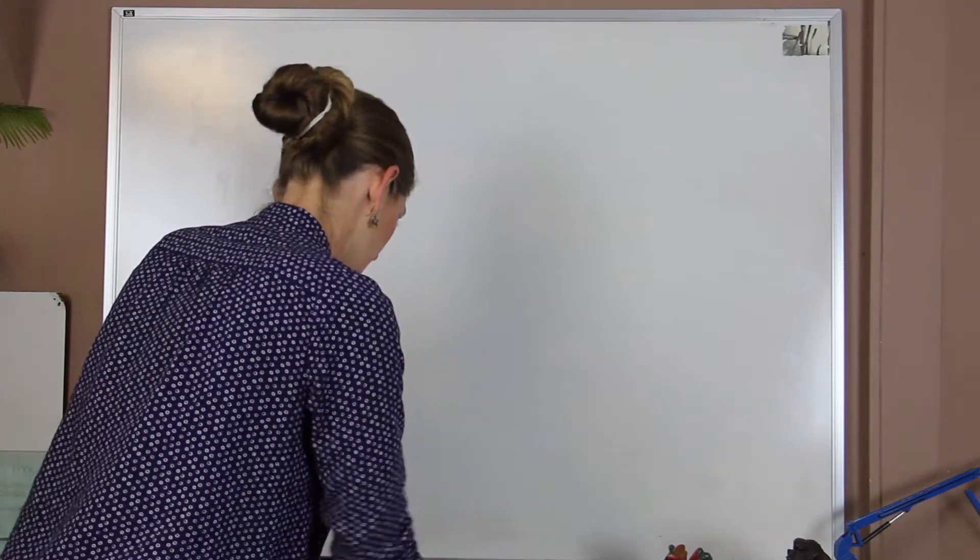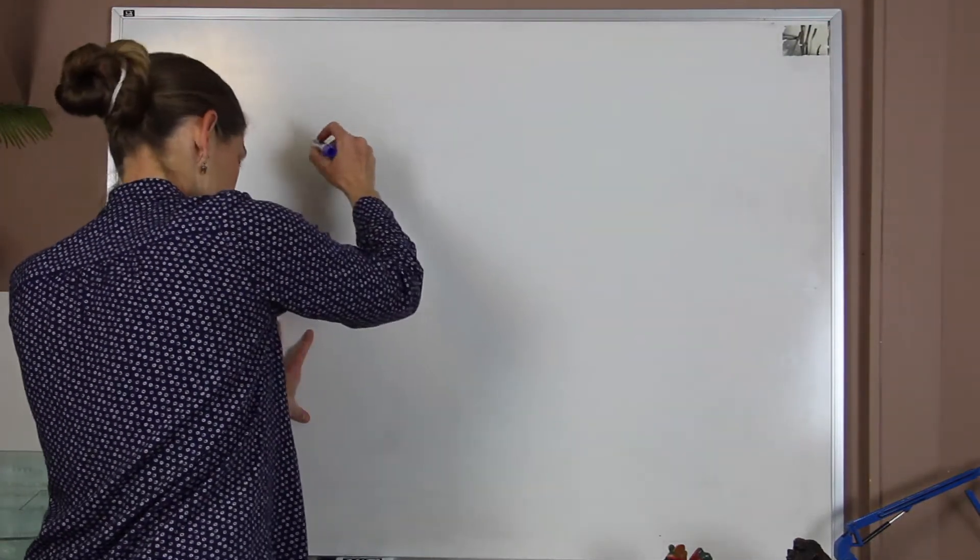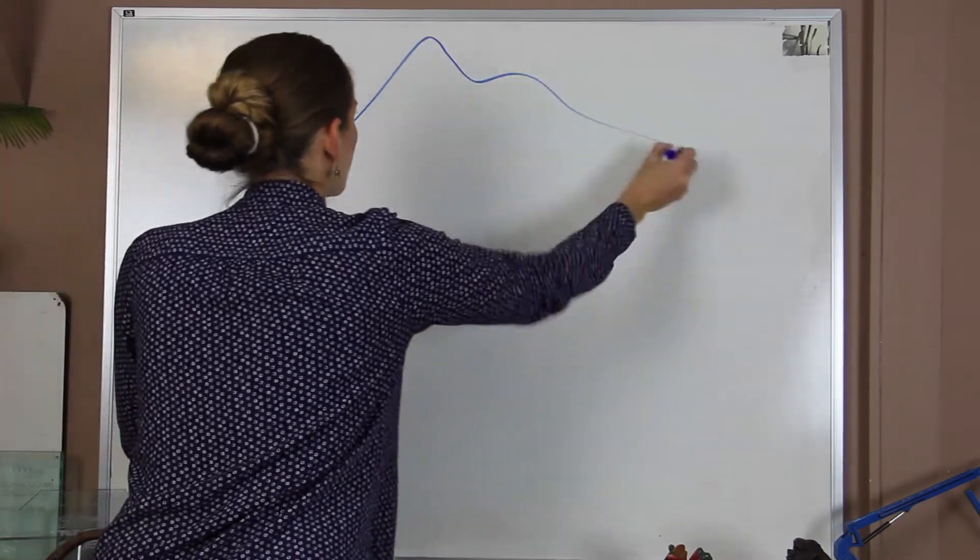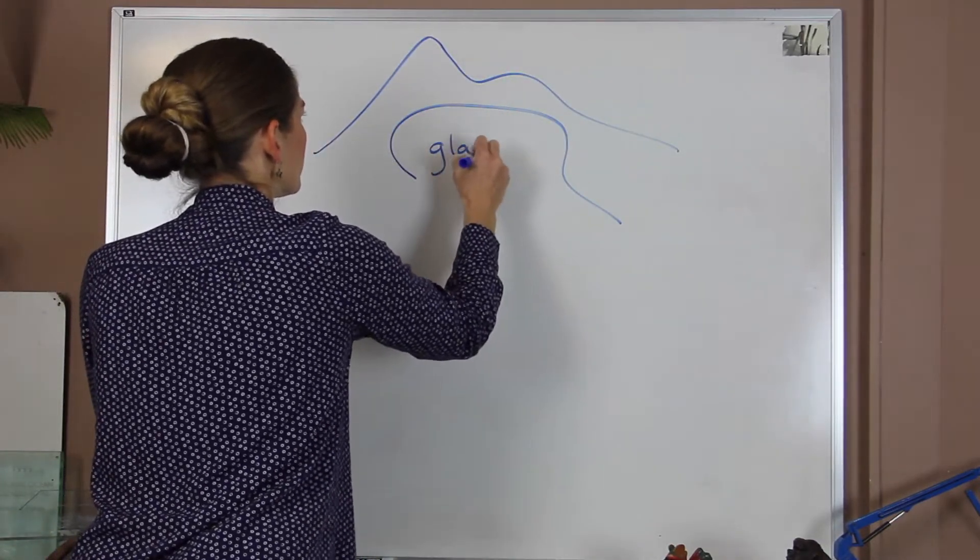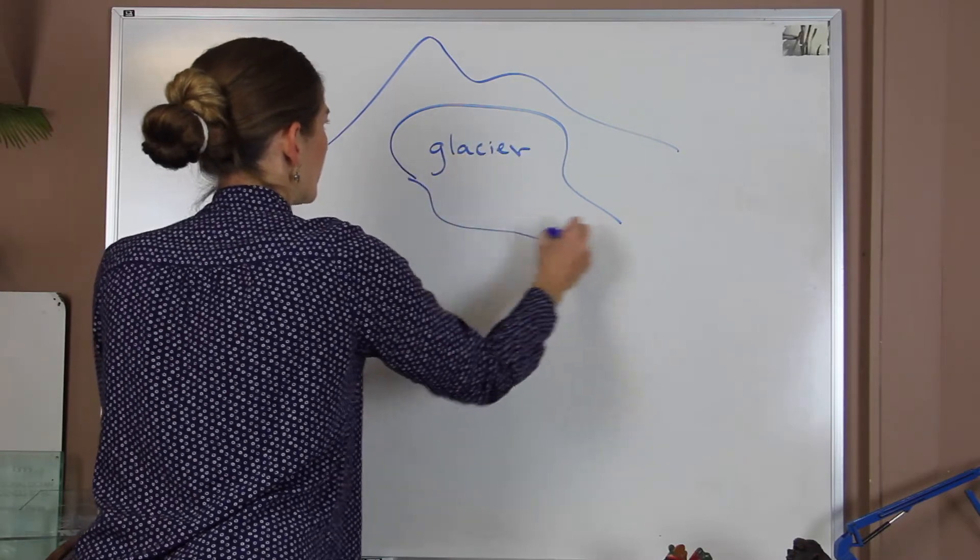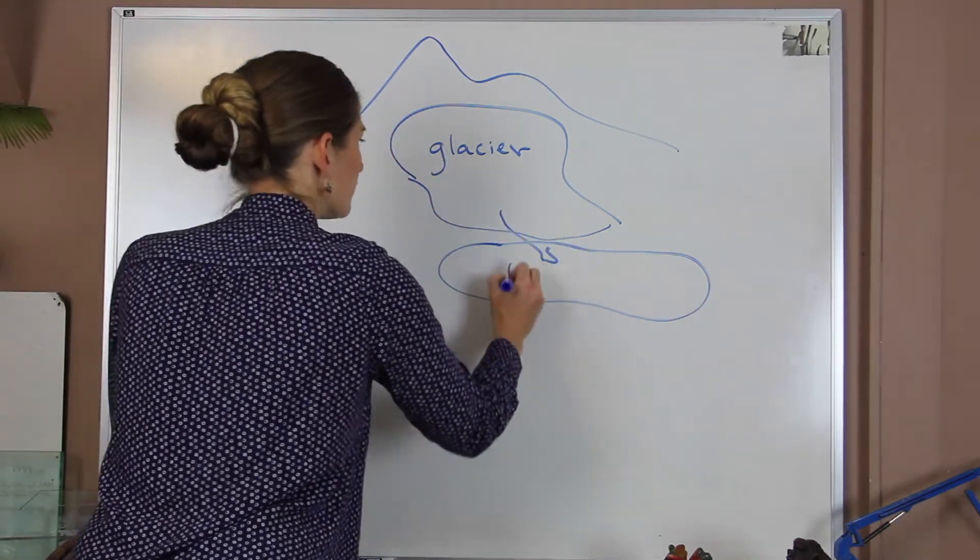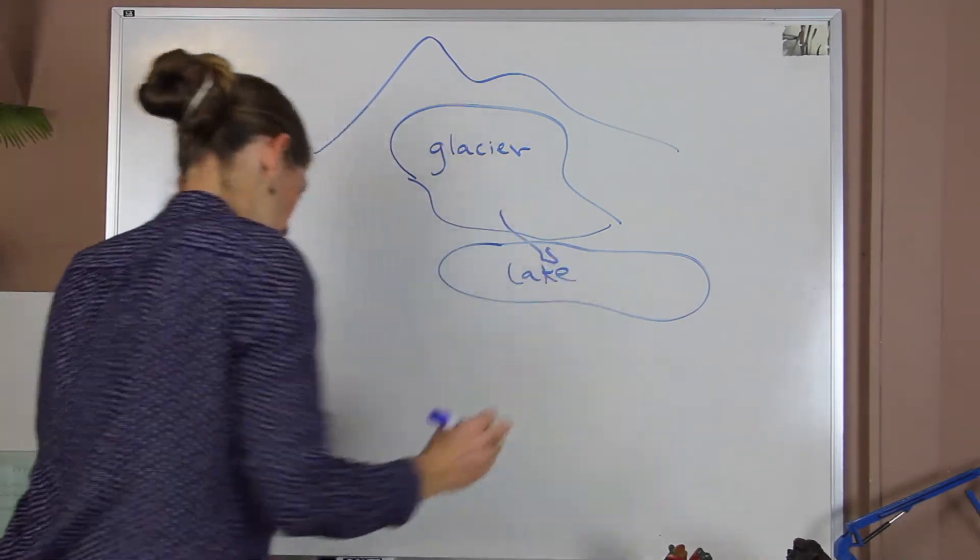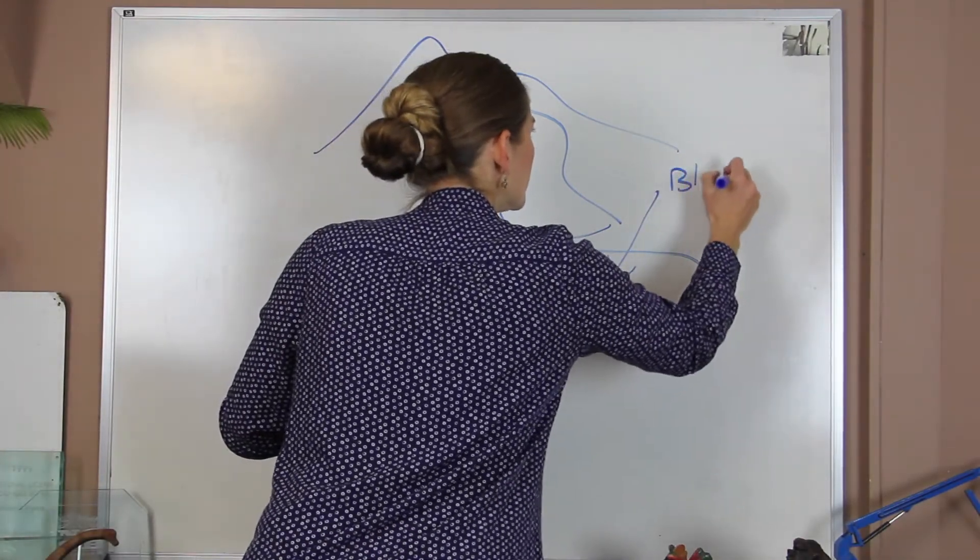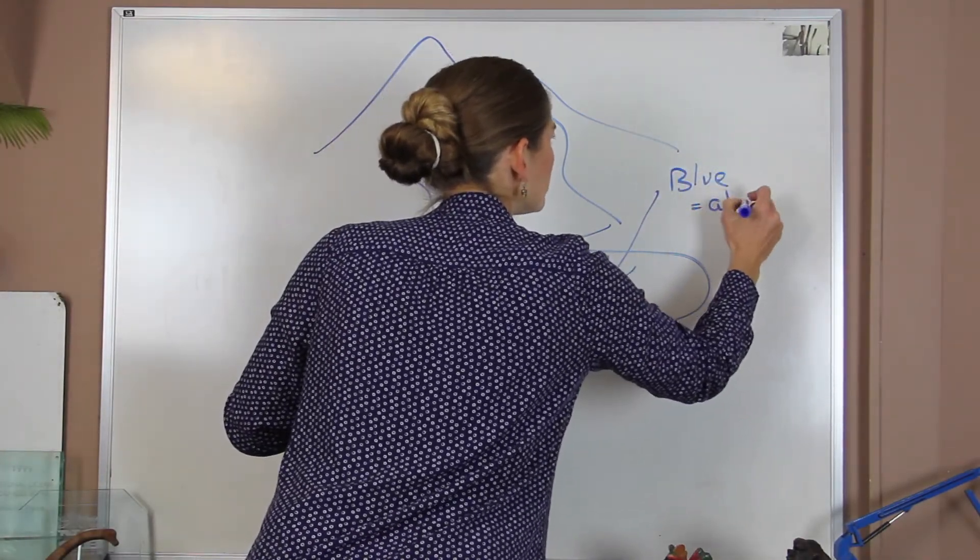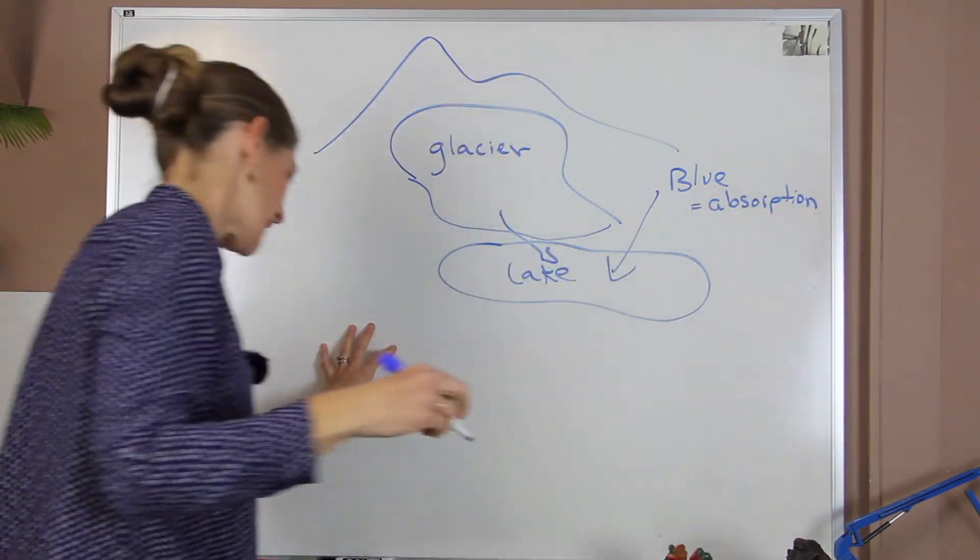All right, and so when we go and we look at this, we'll go back to the lakes again. If we want to kind of draw the landscape, we'll put our glacier here. And as it's melting, it's going to create this beautiful lake. And we know that the water is blue from absorption. So that's the first thing that's happening.